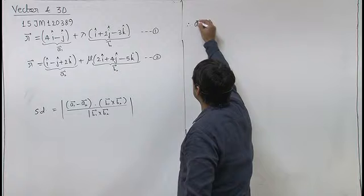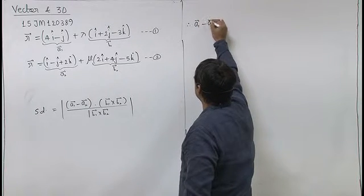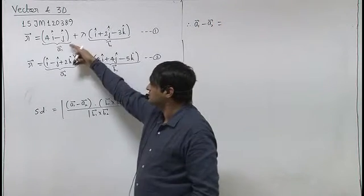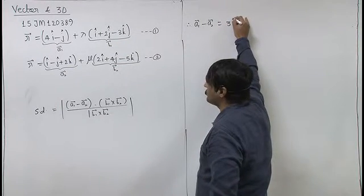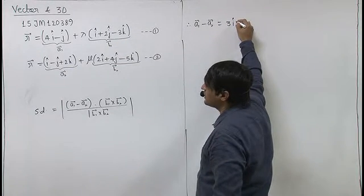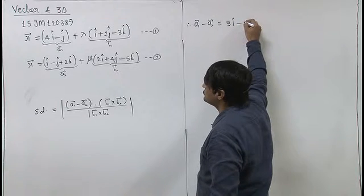a1 minus a2. This is a1 and this is a2. So a1 minus a2 will be 3i cap and minus 2k cap.